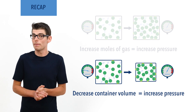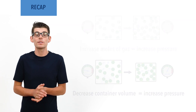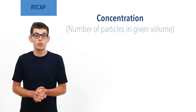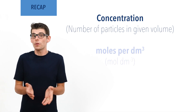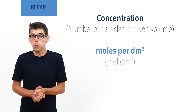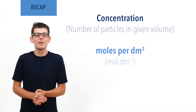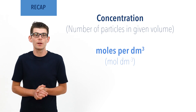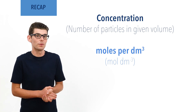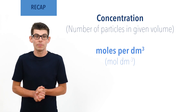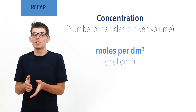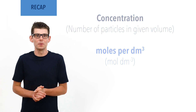Concentration refers to the amount of a substance in a given volume. Units are usually moles per decimetre cubed. For example, one mole per decimetre cubed means there is one mole's worth of the substance in one decimetre cubed volume. In 0.5 decimetre cubed there would be 0.5 moles.